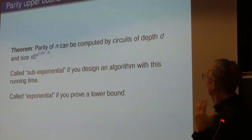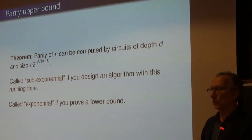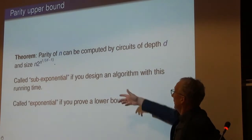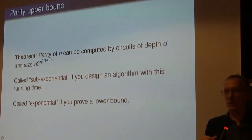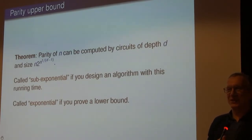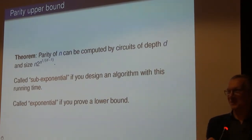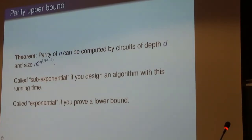The upper bound gives 2^(N^(1/(D-1))). It's funny — when you look at the literature, if you design an algorithm with this running time you call it sub-exponential, but if you prove a lower bound you call it exponential. Scientists are supposed to be precise but we tailor our words to make results sound a little better.